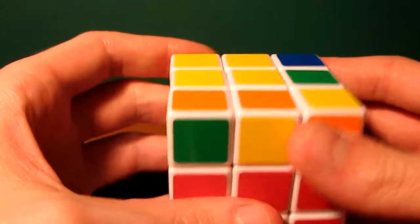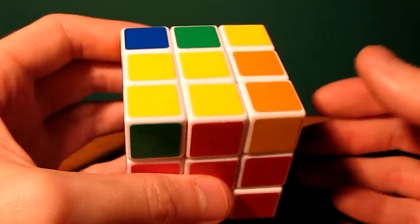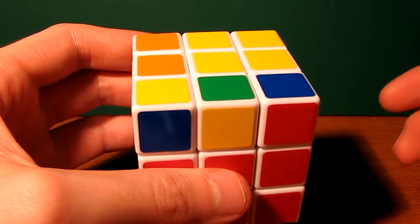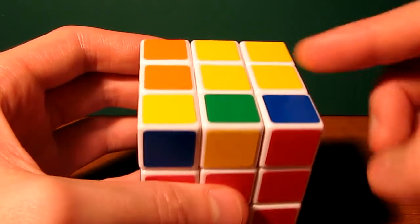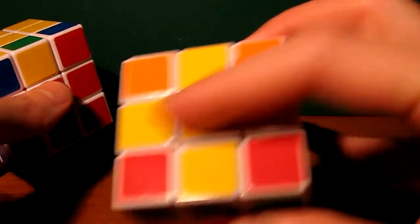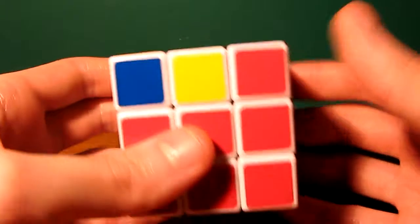So the algorithm we're going to use to solve this—there's actually different algorithms for each case, but I'm only going to show you one algorithm, and depending on the case you get, you're going to execute it one or more times, or zero or more times in the case of the cross. So the algorithm is this.